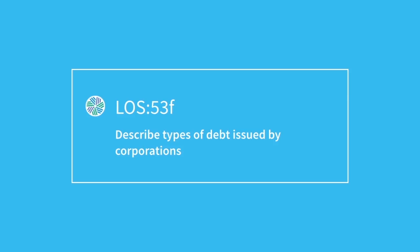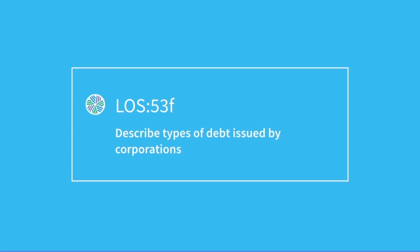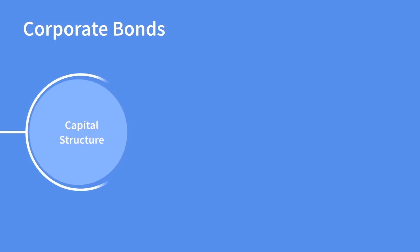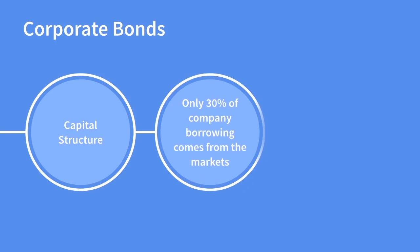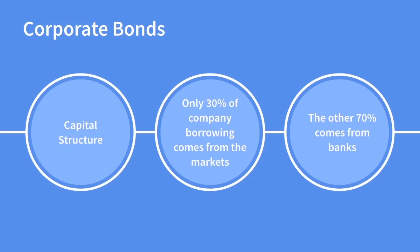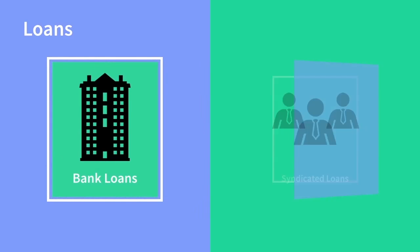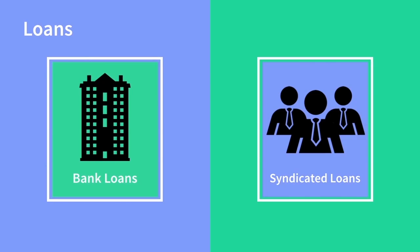Describe types of debt issued by corporations. The key difference between a corporation and a government is that corporations are in it for profit. The issuance of debt is born out of a need for funding as part of an overall capital structure which they then use to finance a hopefully profitable project. It is interesting to note that only 30% of corporate borrowing comes from the capital markets and the rest actually comes from banks. In terms of ways a corporation can access debt funding, we have bank loans and syndicated loans, whereby either a bank or a group of lenders arrange some private terms with the company.